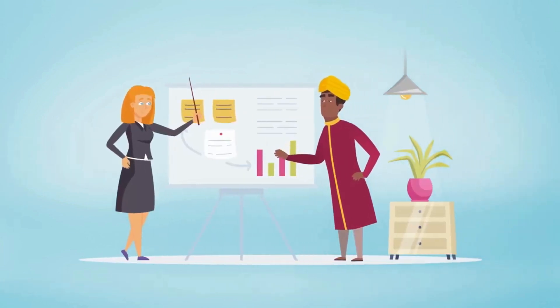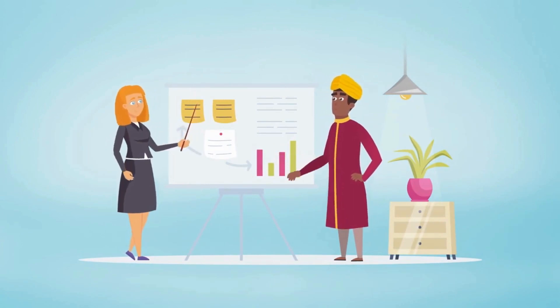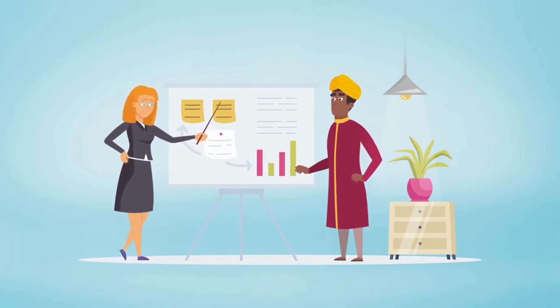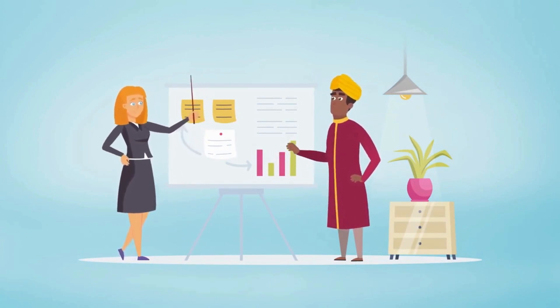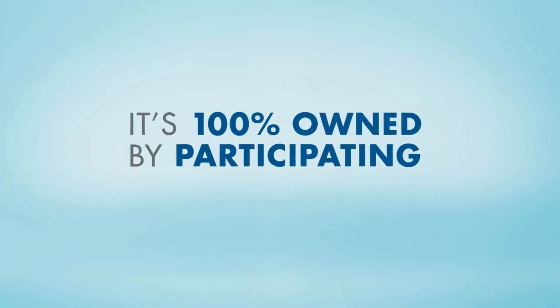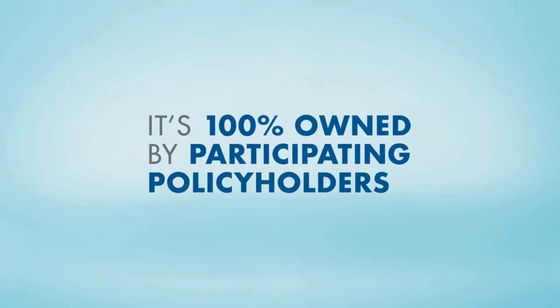Raj's advisor points out one important thing. Equitable Life doesn't have shareholders, which means that it's 100% owned by its participating policyholders.